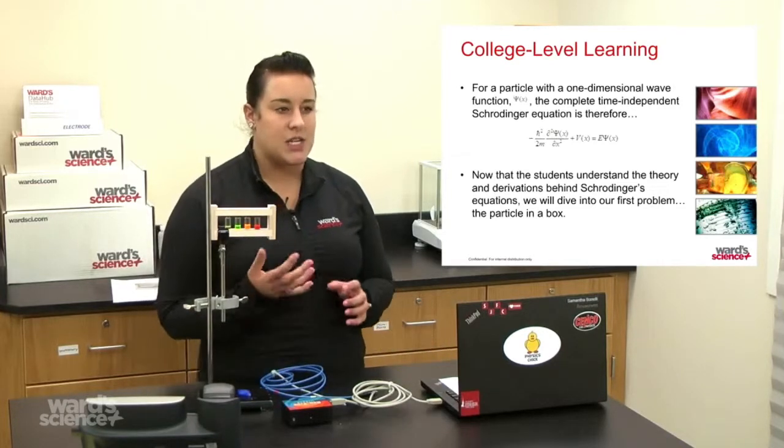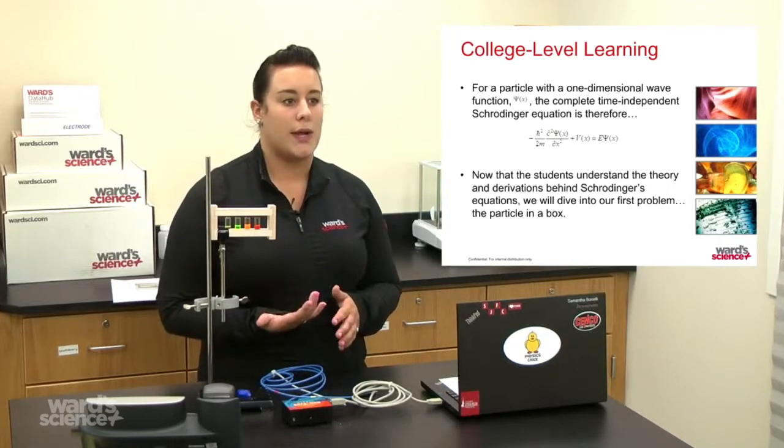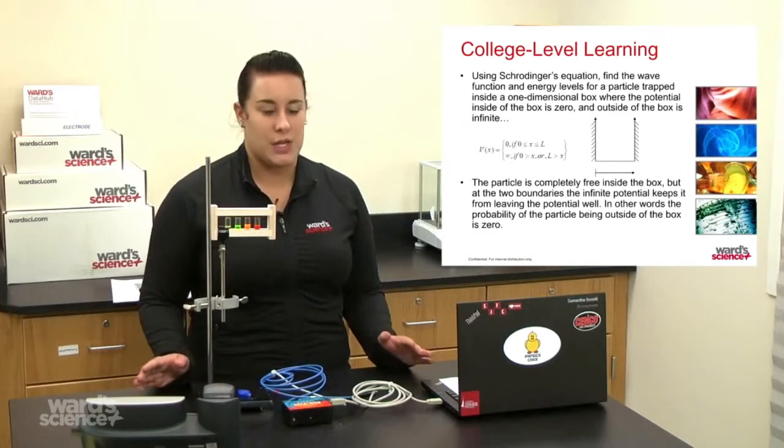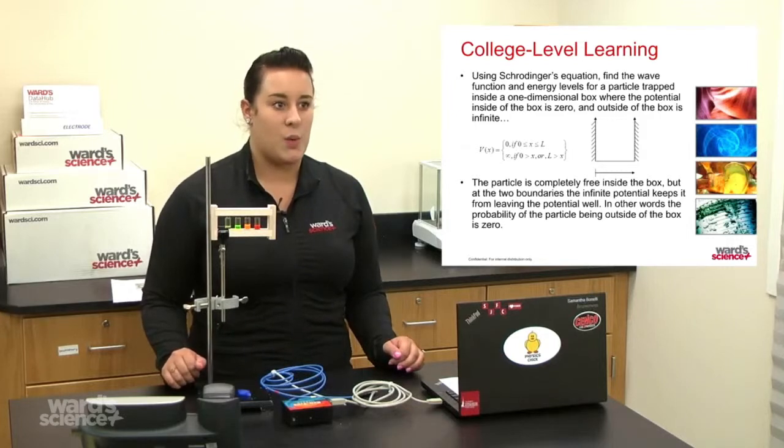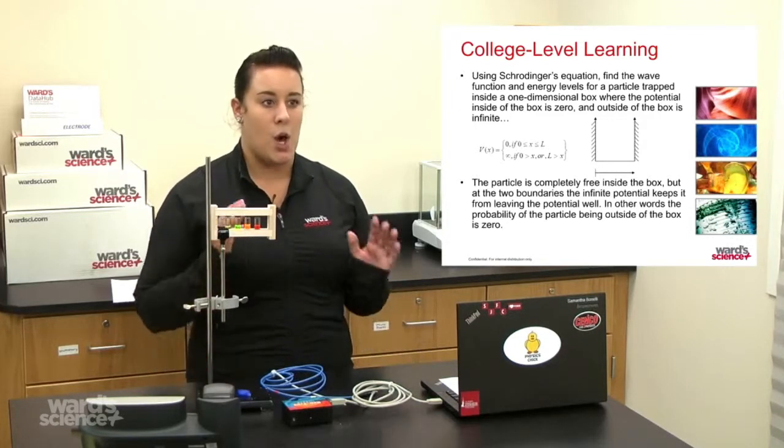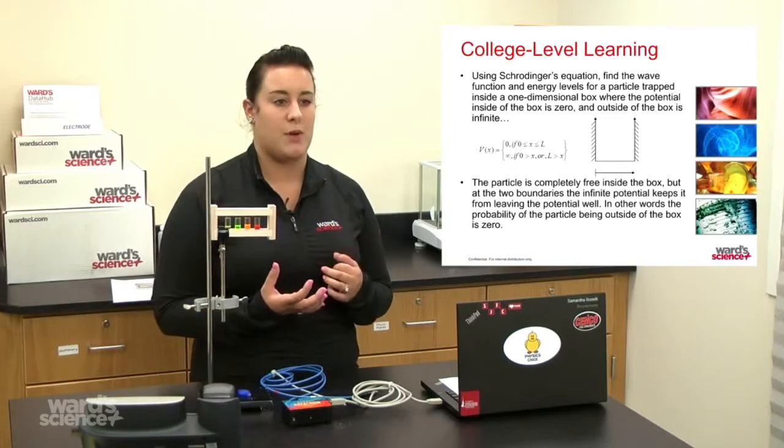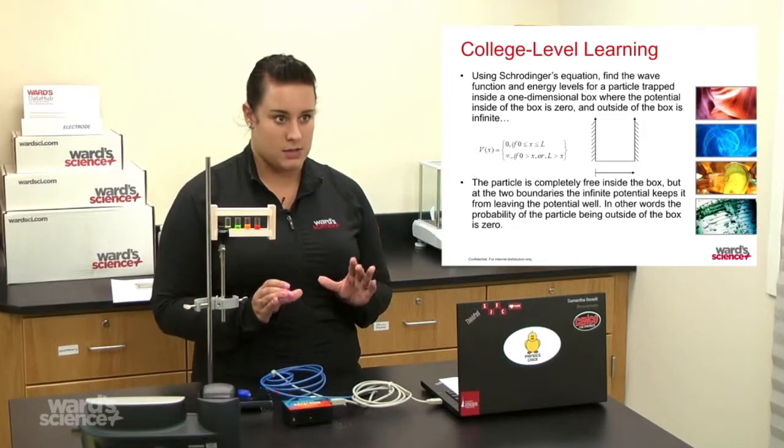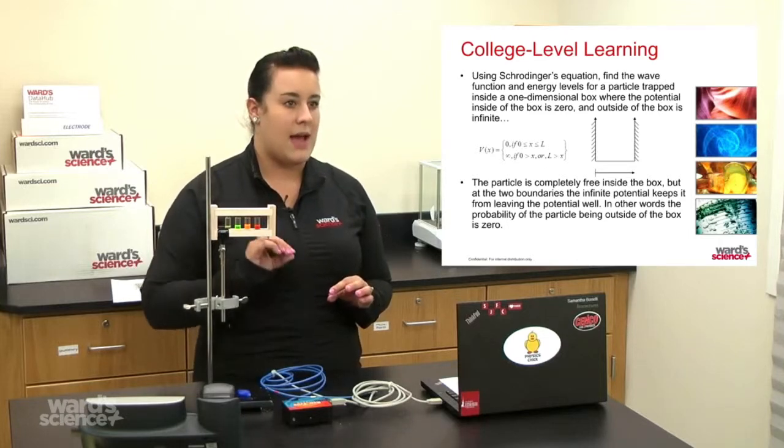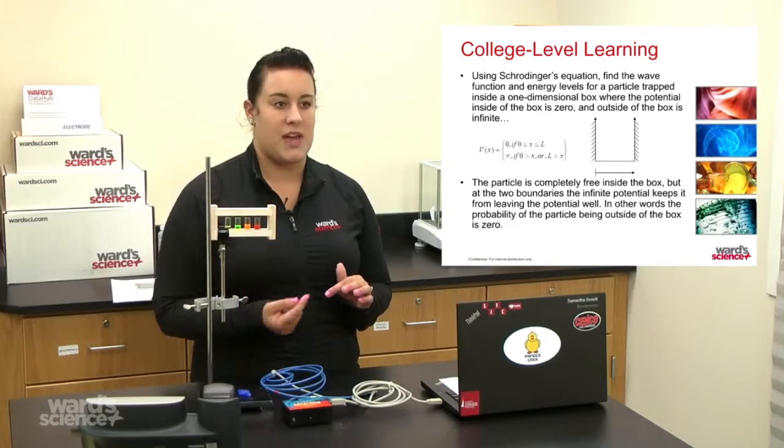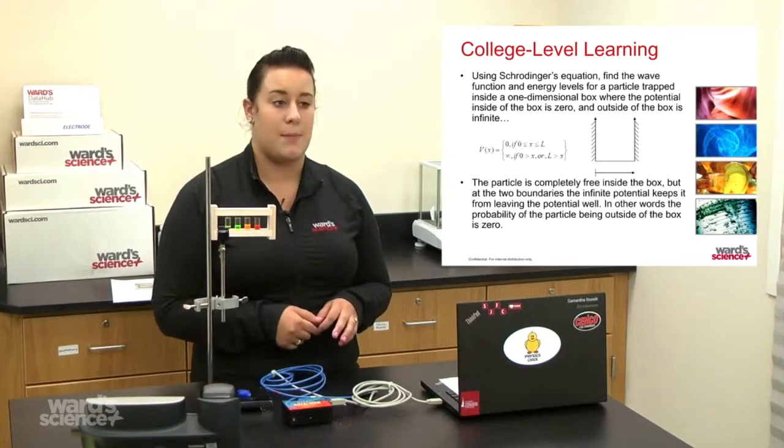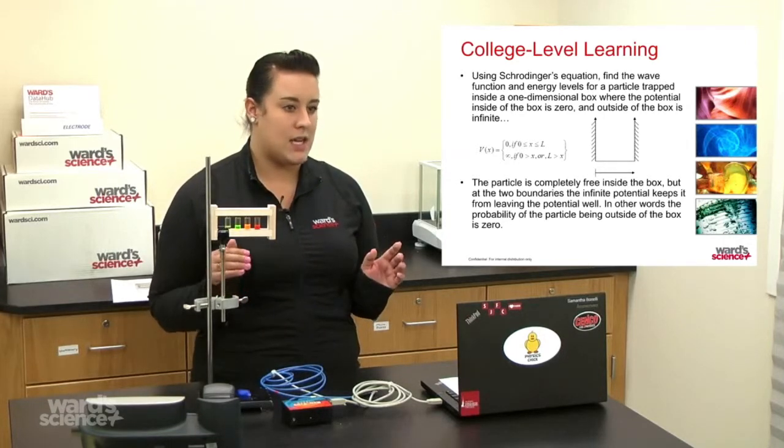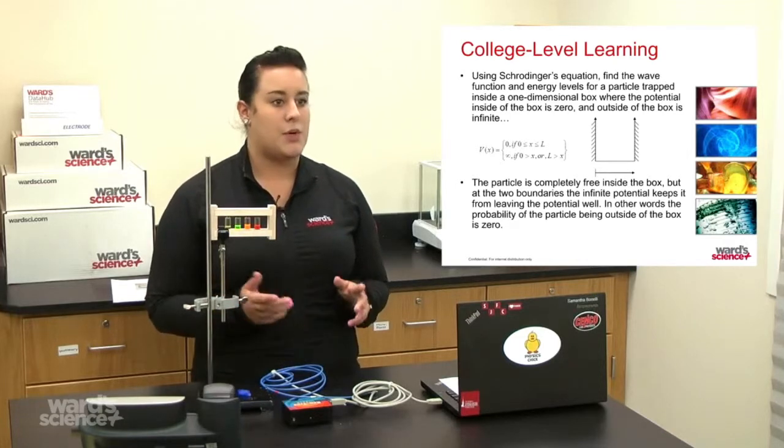Now that the students understand the theory and derivations behind Schrödinger's equations, we're going to dive into our first problem: solving the particle in a box. Using Schrödinger's equation that I just discussed, we're going to find the wave function and energy levels for a particle trapped inside a one-dimensional box. This is going to require a little bit of imagination on the student's part. We're going to picture a particle trapped in a one-dimensional box where the potential inside of the box is zero, but outside of the box it's infinite. I have a little bit of a diagram and the limits set to that box. The particle is completely free inside, but at the two boundaries, the infinite potential keeps it from leaving the potential well. In other words, the probability of the particle being outside of the box ever is zero.